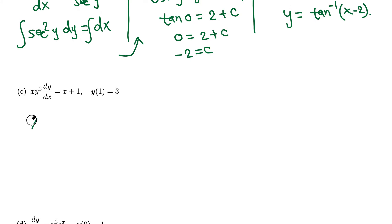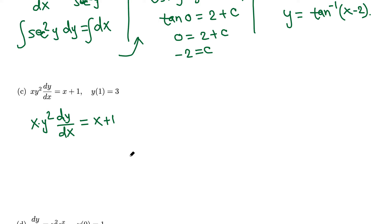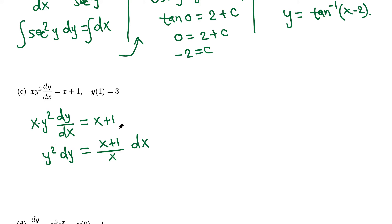For the next problem we have x y squared dy over dx equals x plus 1. We move dx to the other side and divide by x to separate variables, leaving function of y on the left and function of x on the right. That gives y squared dy equals (x plus 1) over x dx.